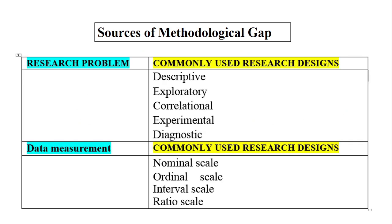Let's discuss what are the sources of methodological gap. The first source is the research problem, which is the very first stage in the research process. There can be a variety of research designs: descriptive studies, explanatory studies, correlational, experimental, and diagnostic. For example, if you choose a particular research topic and a number of descriptive or correlational studies have been done in the previous literature, but you are going to use a different research design that you think will give more accurate and appropriate results.